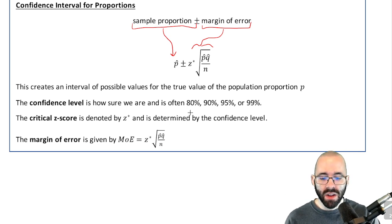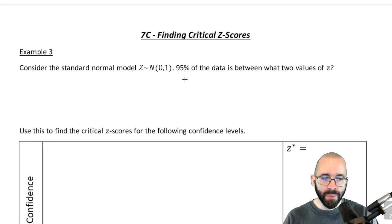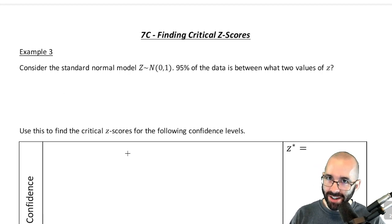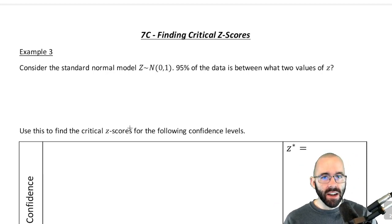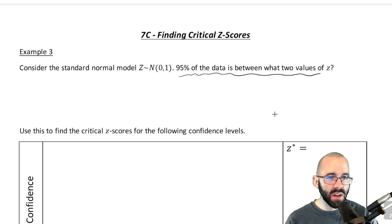We'll do most of those practice with the next video. Okay, so here, let's start with a little leading question to get us into things. Consider the standard normal model z. We talked about this before, the standard normal model with a z. It has a mean of zero and a standard deviation, a spread of one. Well, if you have a standard normal random variable, 95% of the data is between what two values of z?